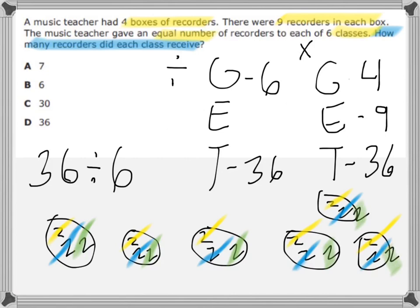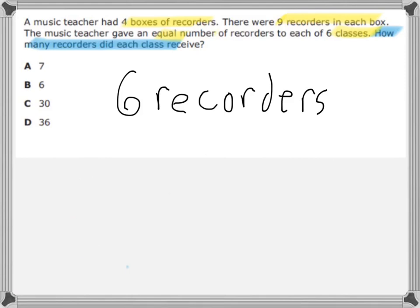So, there's thirty-six total split up into six groups, and each group has three sets of two. So, that is two, four, six. Thirty-six divided by six equals six. So, how many recorders did each class receive? Each class receives six recorders.